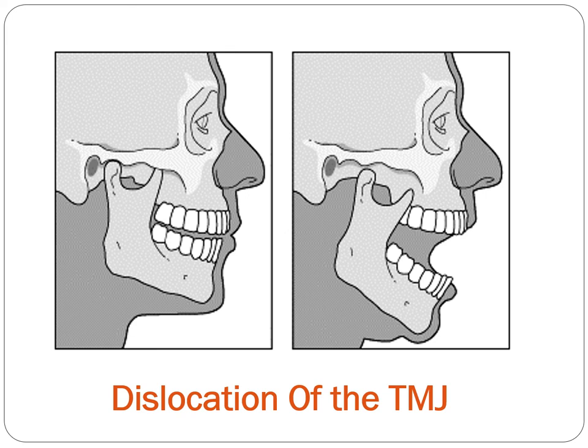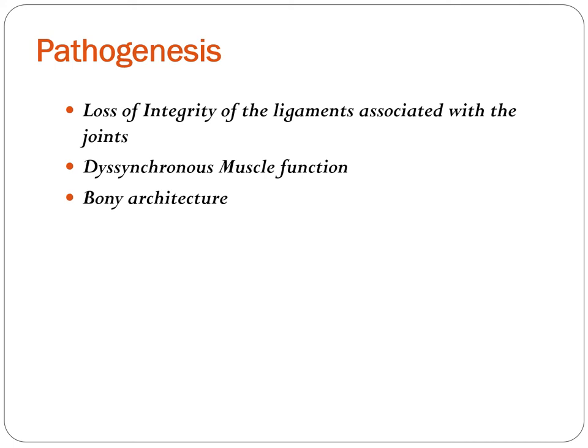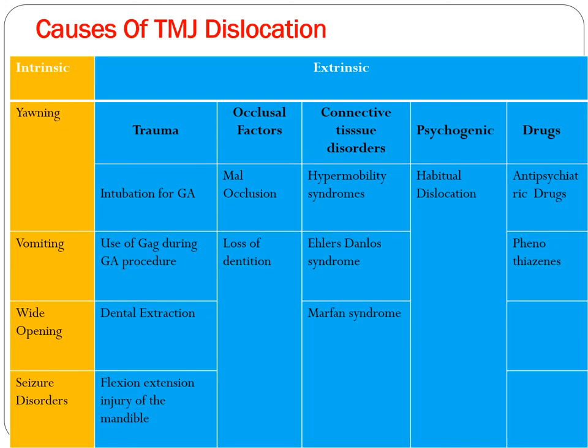Next we look at TMJ dislocation. You can see in the diagram how dislocation of the TMJ happens — the condyle moves forward beyond the articular eminence and dislocates out of the joint.